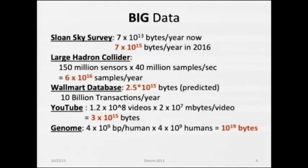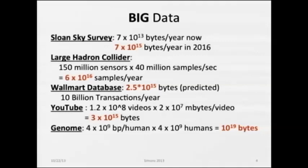If you look at articles about big data and where the big data comes from—or even the Wikipedia page—they list all sorts of sources of very big data. Near the top of the list are things like the Sloan Sky Survey generating huge amounts of data, the Large Hadron Collider with sensors generating data at very high rates, Walmart collecting every minuscule piece of data they possibly can for many years, YouTube with a lot of videos, and you can imagine someday having the human genome sequence for every human. These are all relatively large sets of data.